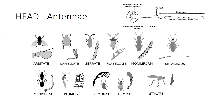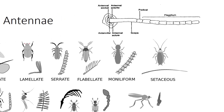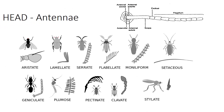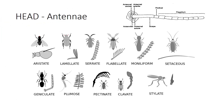Antennae vary greatly among insects, but all follow a basic plan. Segments 1 and 2 are termed scape and pedicel, respectively. The remaining antennal segments, flagellomeres, are jointly called the flagellum. Antennae function almost exclusively in sensory perception. Some of the information that can be detected by insect antennae include motion and orientation, odor, sound, humidity, and a variety of chemical cues. Some of the most common types of insect antennae include setaceous such as in dragonflies, clavate in some beetles, aristate in flies, and geniculate in ants.